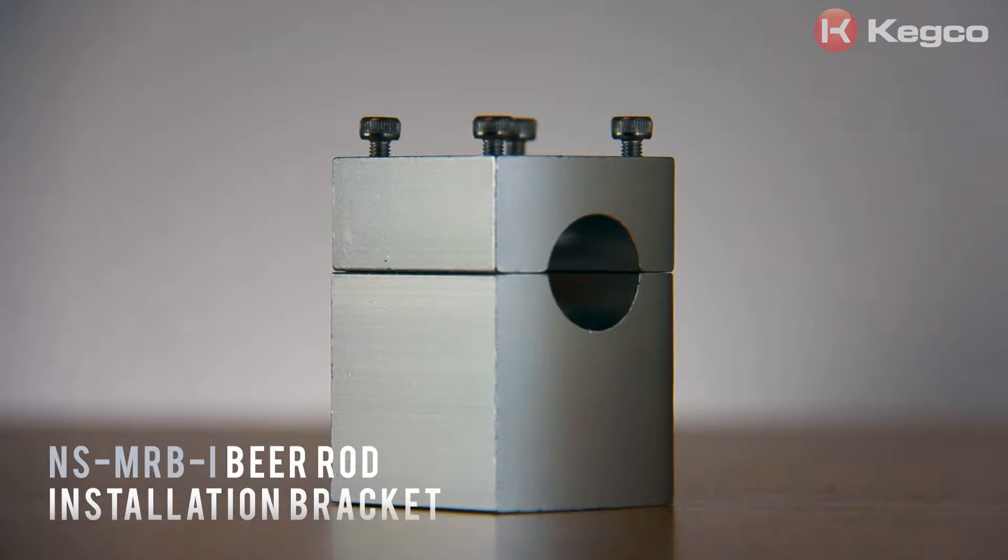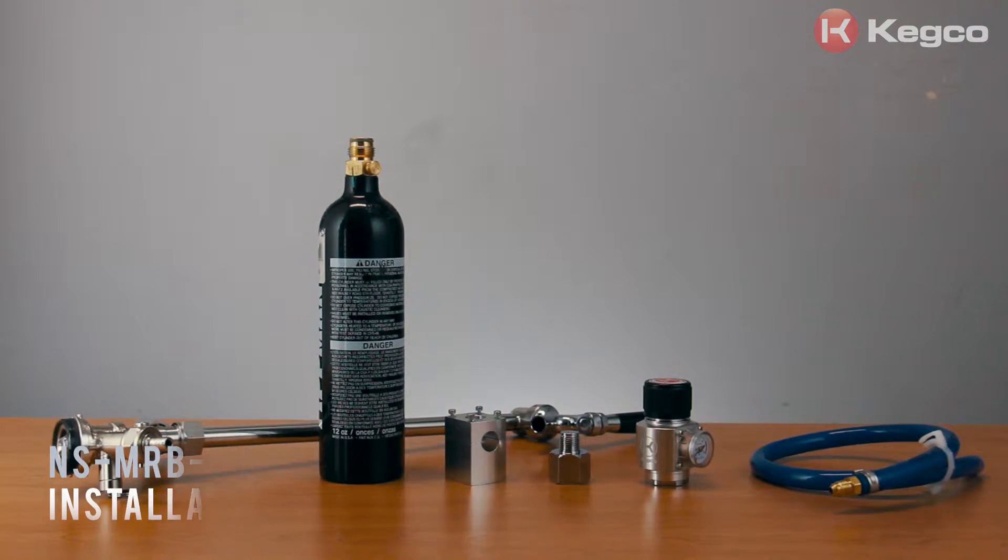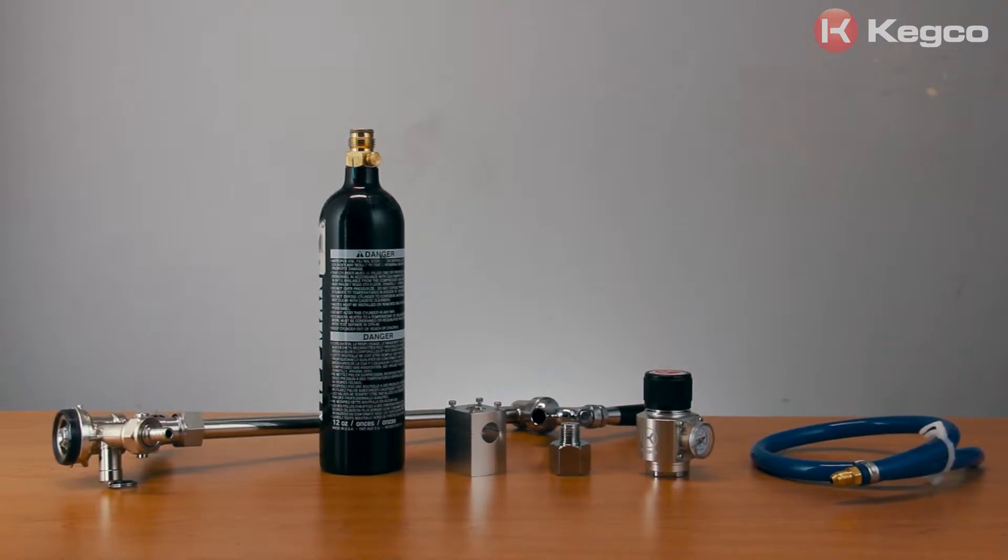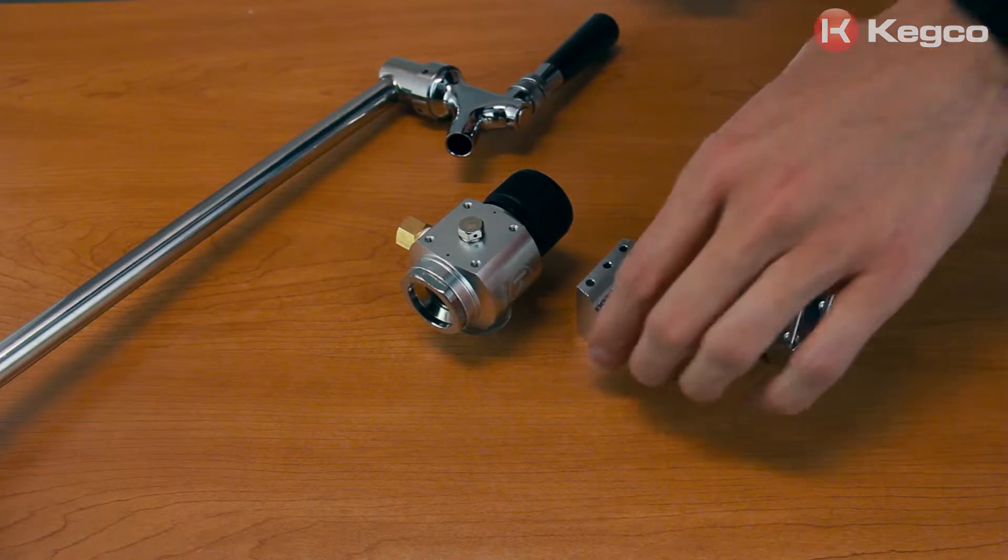This installation bracket is designed to attach your Kegco Mini regulator to a beer rod on a commercial keg coupler. To install the bracket,